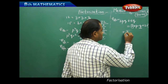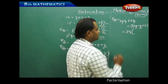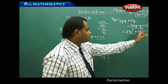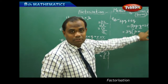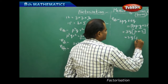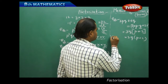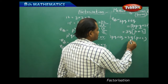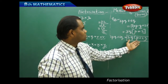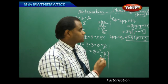So 3 and q being the common terms come out of the bracket. The only thing remaining in the first term after 3 and q come out is p, and in the second term the only thing remaining is 2. So overall, the factors of 3pq + 6q are 3 × q × (p + 2). This is how we find the most possible common factors for a given algebraic expression.